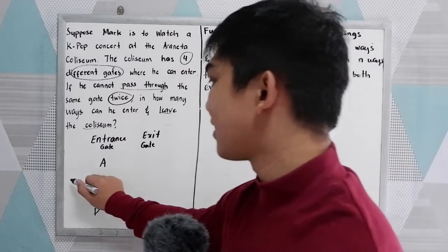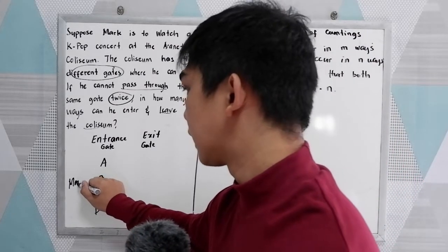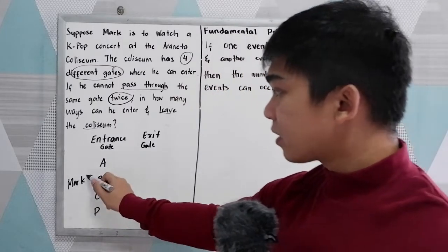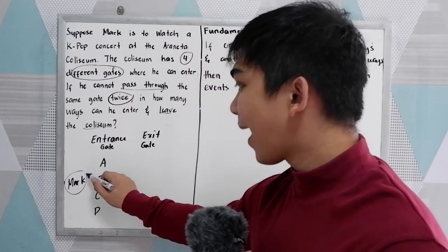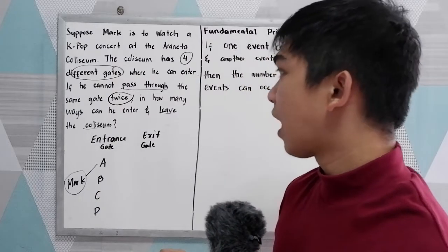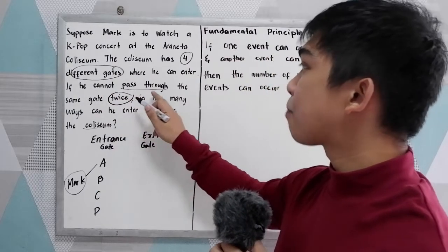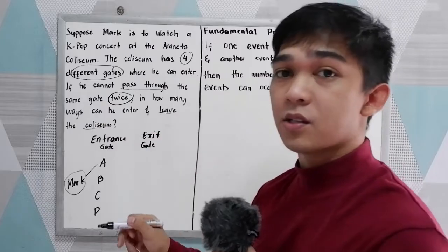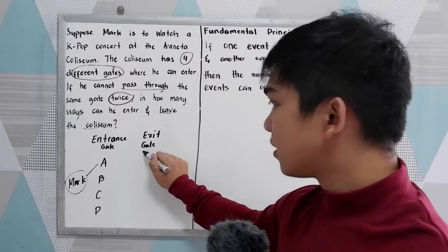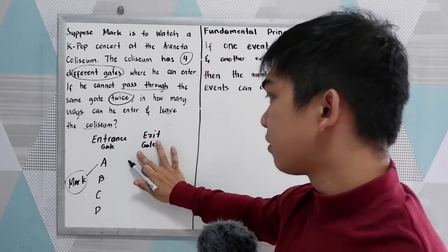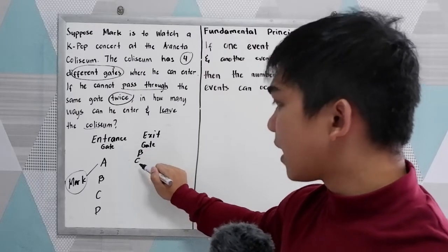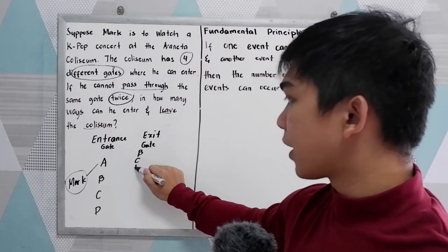So let's say this is Mark. If Mark enters at gate B, our condition is he cannot pass through the same gate twice, so his exit can be gate A, gate C, or gate D.